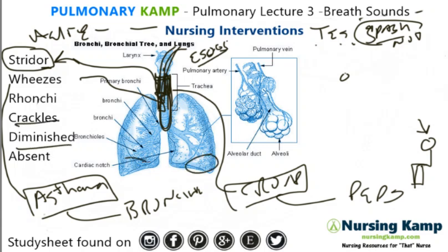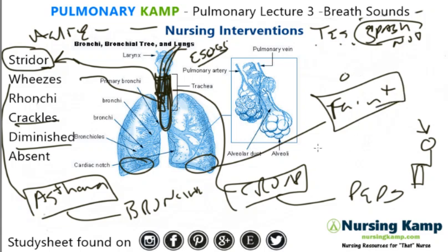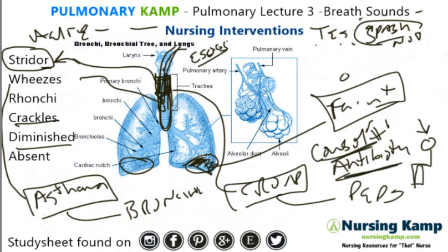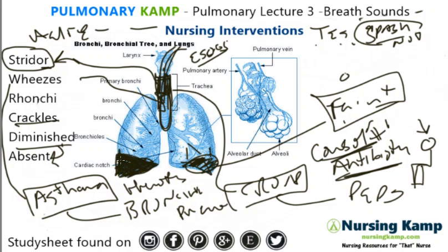Diminished breath sounds — you can't really hear them, so they're faint. Diminished lung silence could be consolidation, and consolidation comes from infections, generally treated with antibiotics. Turn, cough, and deep breathing is not really going to help because it's so far down. Diminished is sometimes called absent, and absent is always acute. Absent is acute because you can't hear it — it could be a hemothorax, a pneumothorax, or diminished that has resulted in a collapsed area of consolidation.